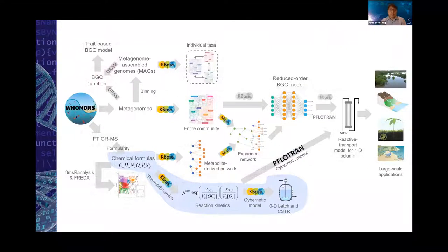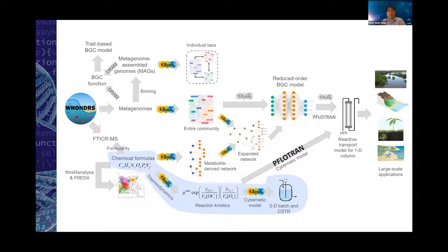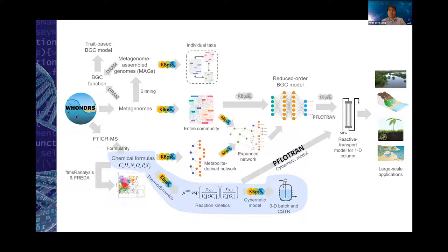For those who attended yesterday's session, you may recognize this overview figure. Today, what I'm going to cover is this part: starting from the chemical formula of compounds. In the morning, Bob talked about how to process FT-ICR MS data and generate chemical formulas. What I'm going to talk about is how thermodynamic theory can play a role in deriving stoichiometric reactions and kinetic equations, and then how we can use them for batch and CSTR simulations. I'll also talk about what tools are available and how we made this implementable in KBase.